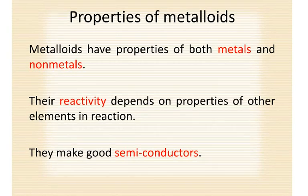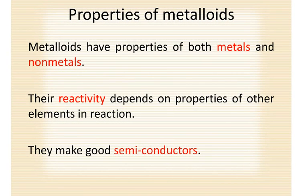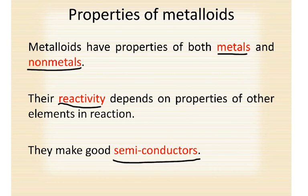Now let's look at metalloids. Metalloids basically have properties of both metals and nonmetals, and their reactivity depends on the properties of the other elements — so sometimes they act like a metal and sometimes like a nonmetal. They are very good semiconductors, meaning they conduct electricity but not as readily as a metal. That's why they're called semiconductors, and they're great for electronics — you don't want too much electricity going through there.